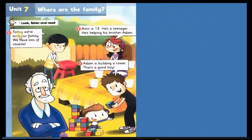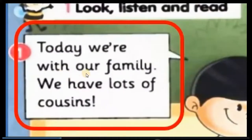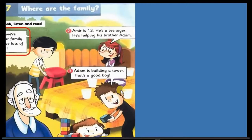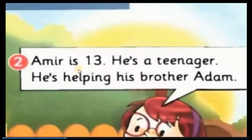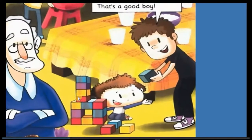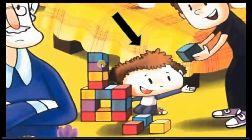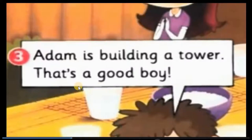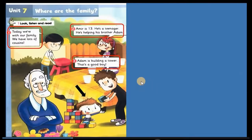Now let's read the dialogue between Hani and Hana. Hani says: today we're with our family. We have lots of cousins — lots of means many. Hana says: Amir is 13, he is a teenager — meaning between 13 and 19 years old. He is helping his brother Adam, who is a very young child and is building a tower.